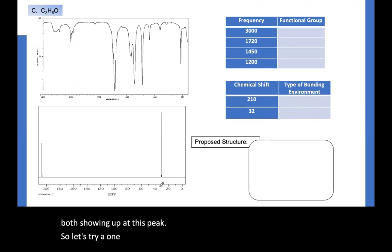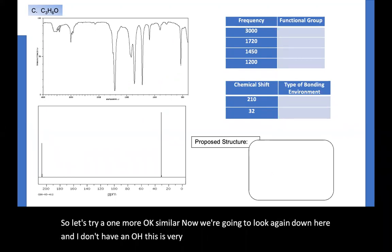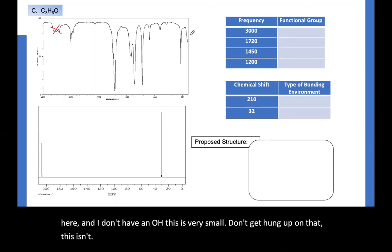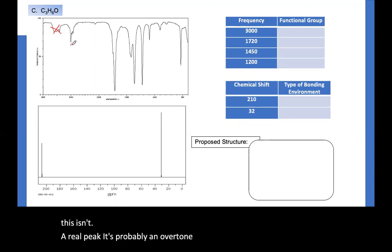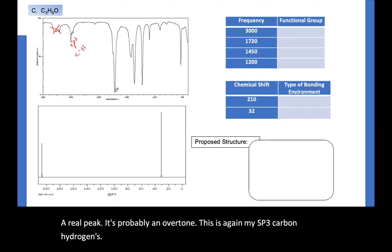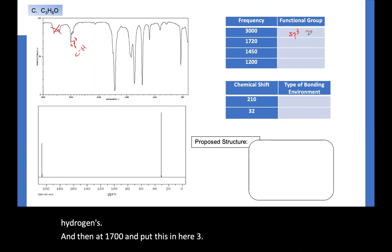Okay. So let's try one more. Now we're going to look again down here. And I don't have an OH. This is very small. Don't get hung up on that. This isn't a real peak. It's probably an overtone. This is, again, my SP3 carbon hydrogens. And then at 1700, let me put this in here, SP3 carbon hydrogen. 1720 is the classic carbon double bond oxygen.